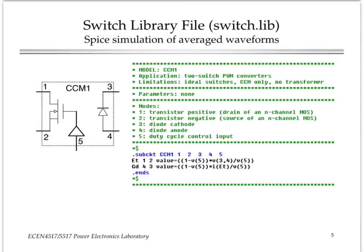Important point to note again is that this CCM1 model is the average model, not a switching model, and so we are not going to apply a pulsating waveform. We are going to apply the duty cycle value that drives the switches. The sub-circuit implementation is just two SPICE lines that represent the controlled voltage source and the controlled current source, and the value is expressed in terms of the port quantities and the value V of five, where V of five is really equal to the value of the duty cycle.